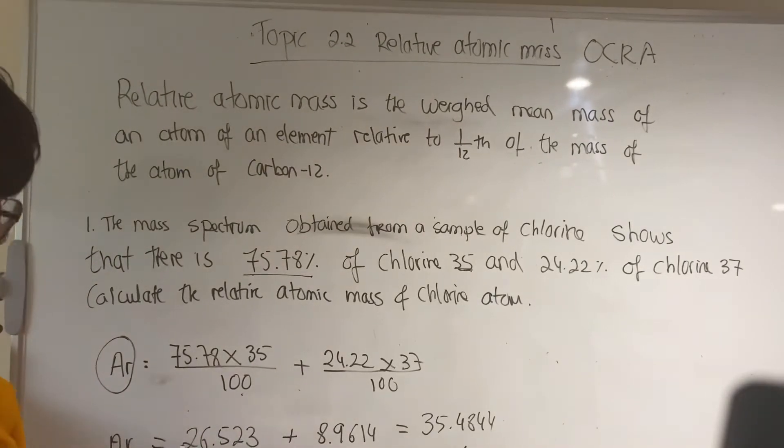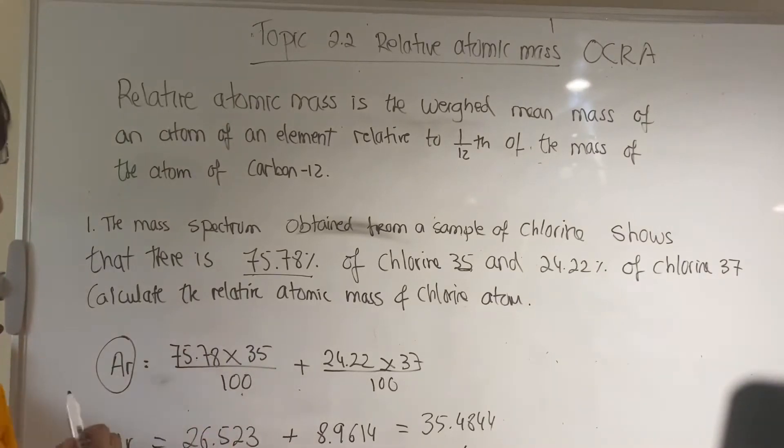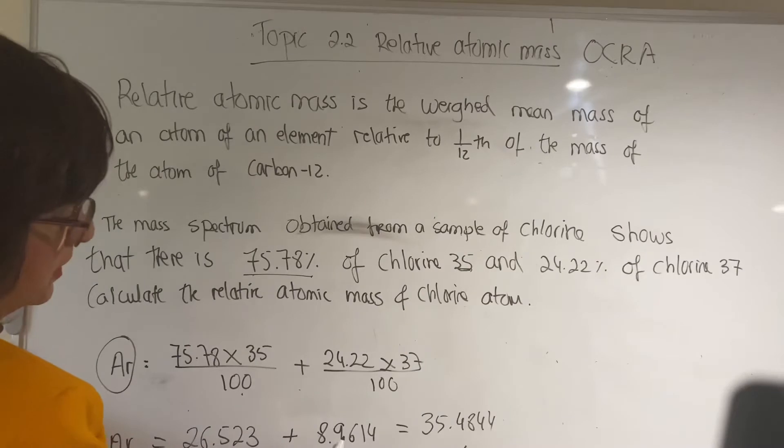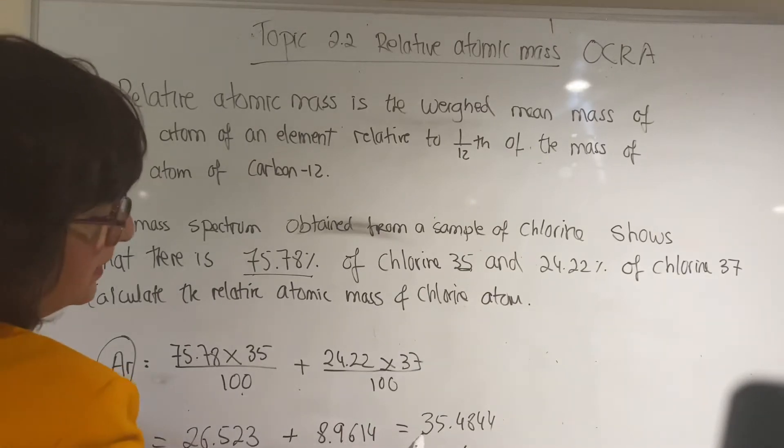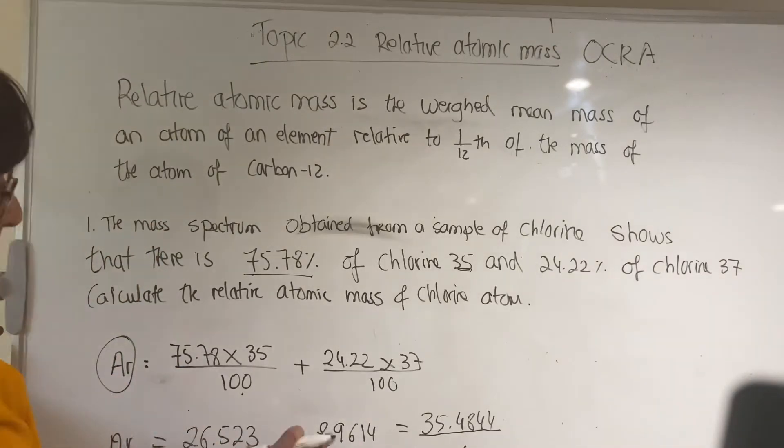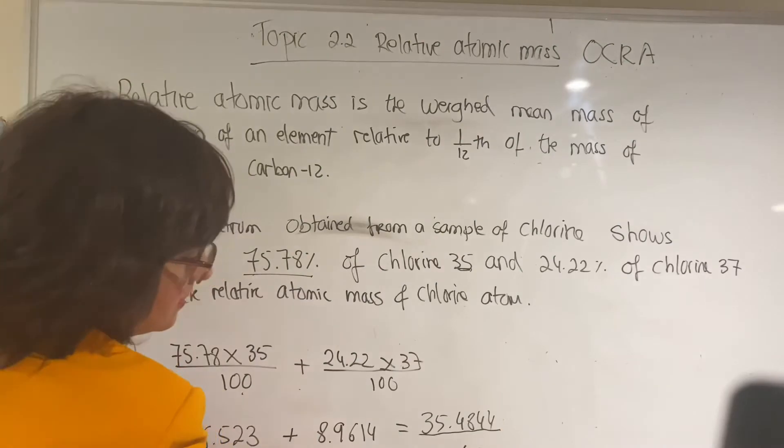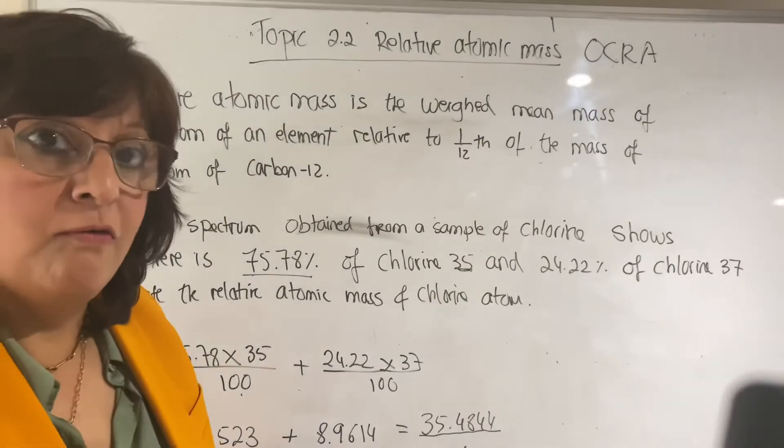The answer will give you, if you go slowly, this bit here gives you 26.523 for the first fraction, plus 8.964 for the second fraction. If you add them together, it gives you 35.4844. I'll round to two decimal places for 35.48. So the relative atomic mass of chlorine is 35.48.